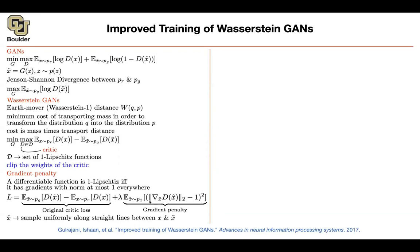Student: I'm still confused about X-hat — the sampling uniformly along straight lines between X and X-tilde. Where exactly are you enforcing this? Instructor: You want this to hold almost everywhere, but you cannot sample your entire space because these are high-dimensional images — it's too big. You want to compute this expectation efficiently. The efficient way is to look at the line between the real example and the generated example, and do your expectation along that line. Otherwise the space is too big to span entirely.